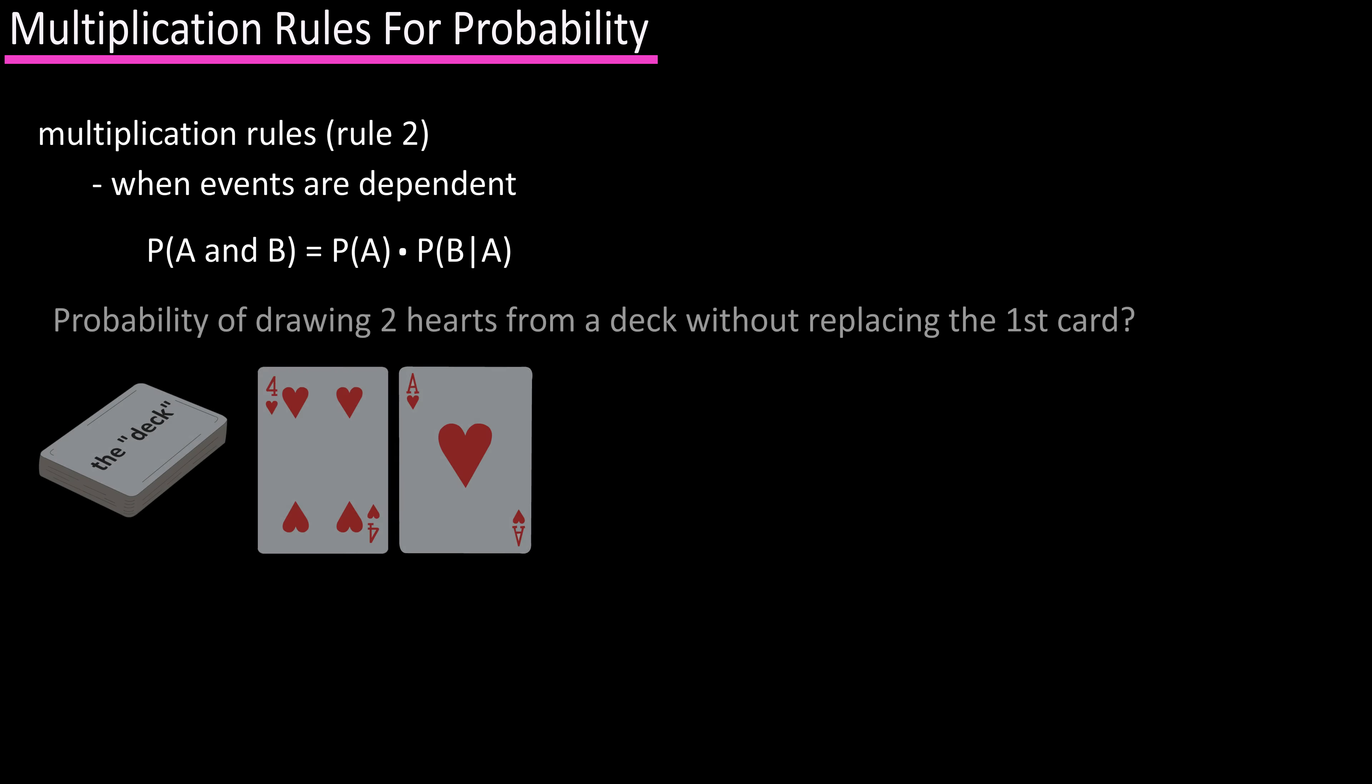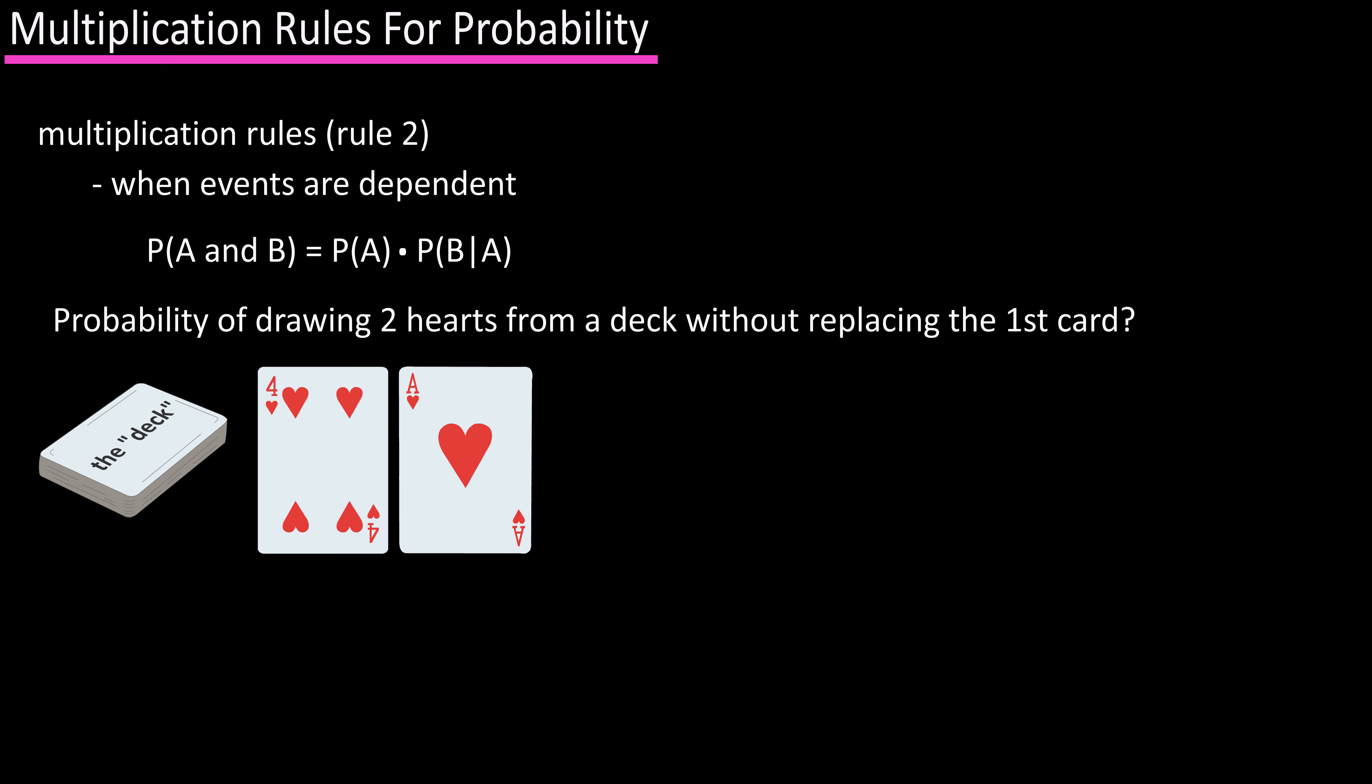To use this rule, let's say we want to find the probability of drawing two hearts from a deck without replacing after drawing. There are 52 cards in a deck, 13 of them are hearts, and we will assign drawing a heart as the first card as event A, and drawing a heart as the second card as event B.